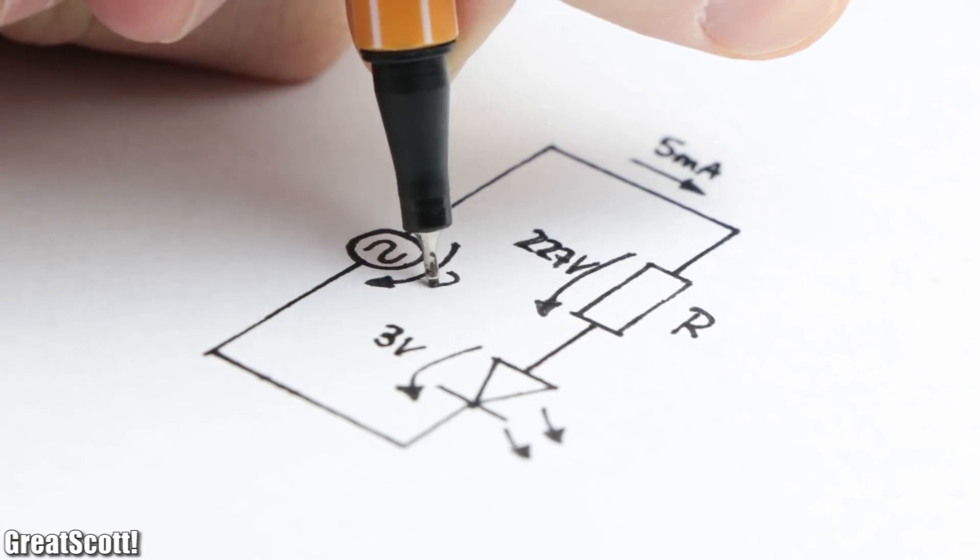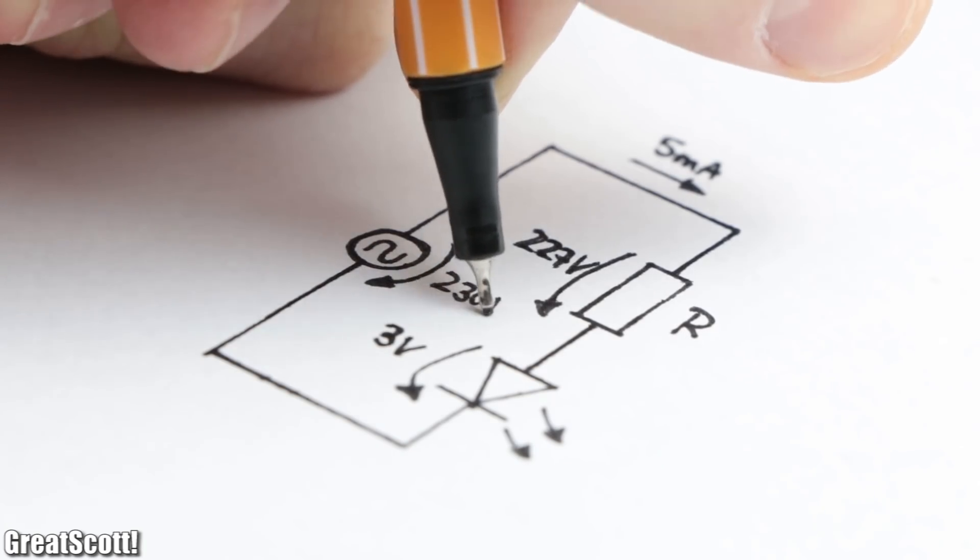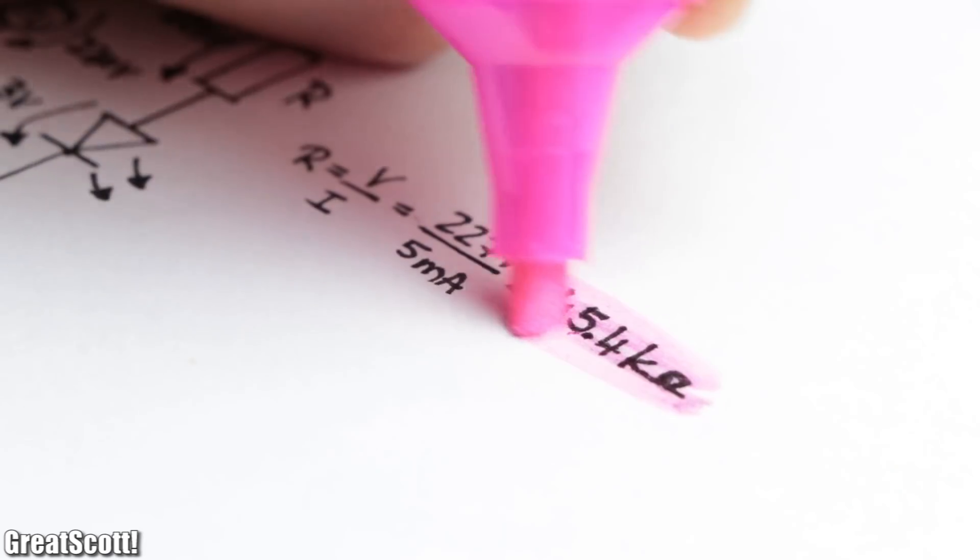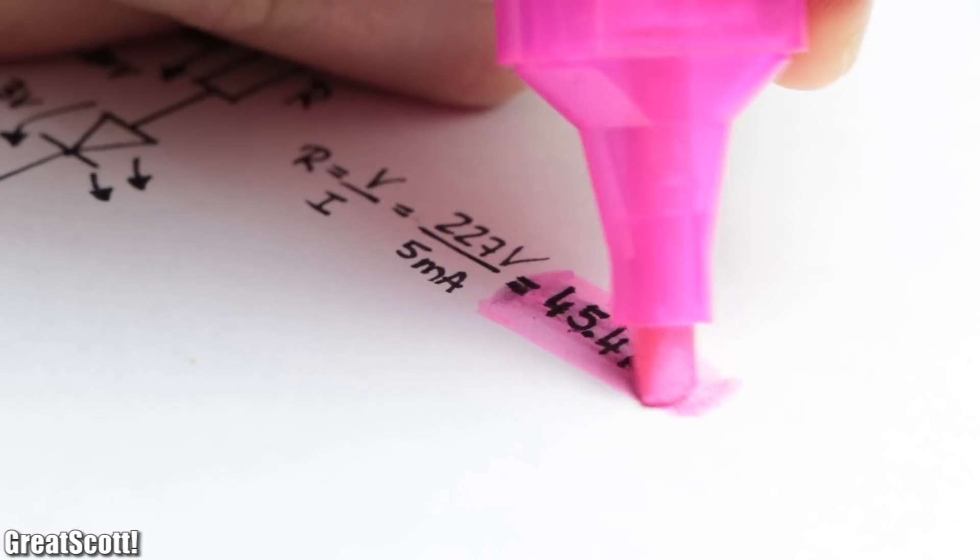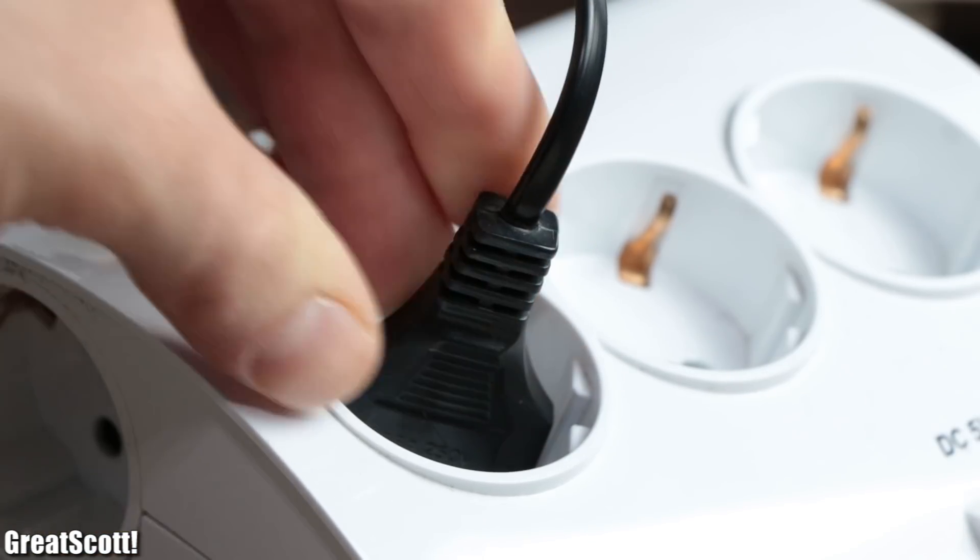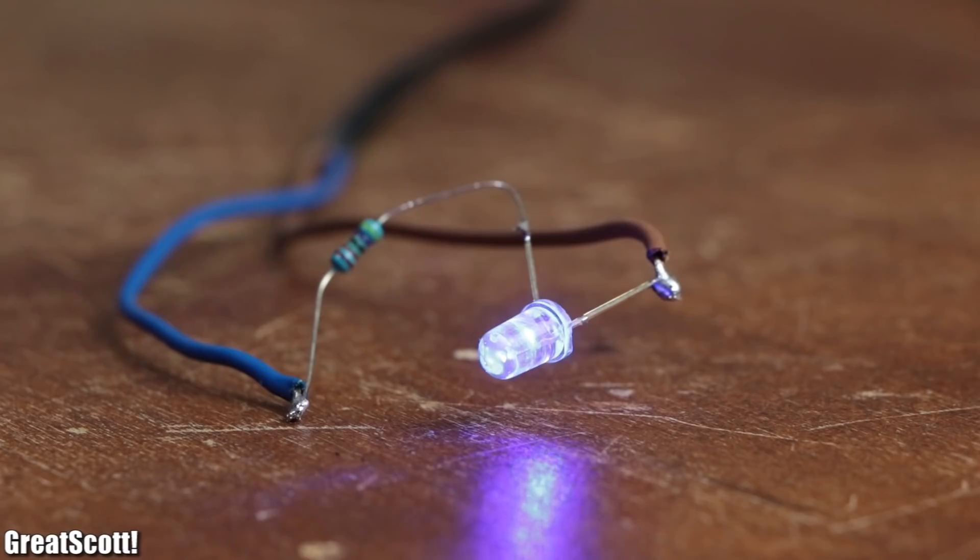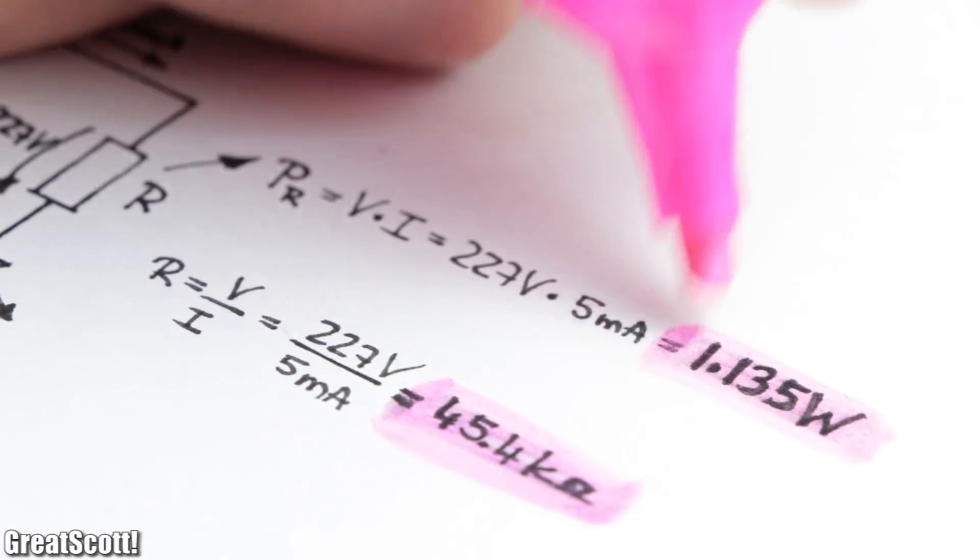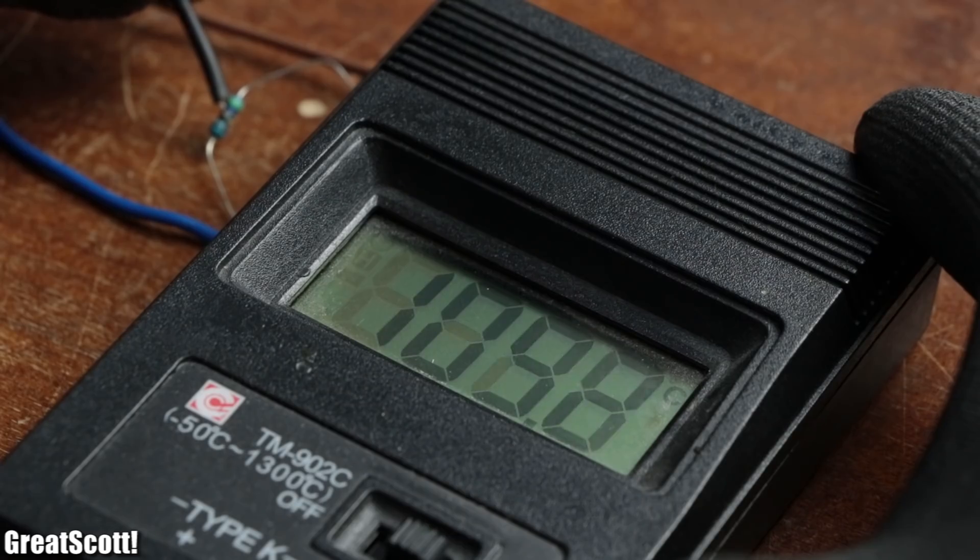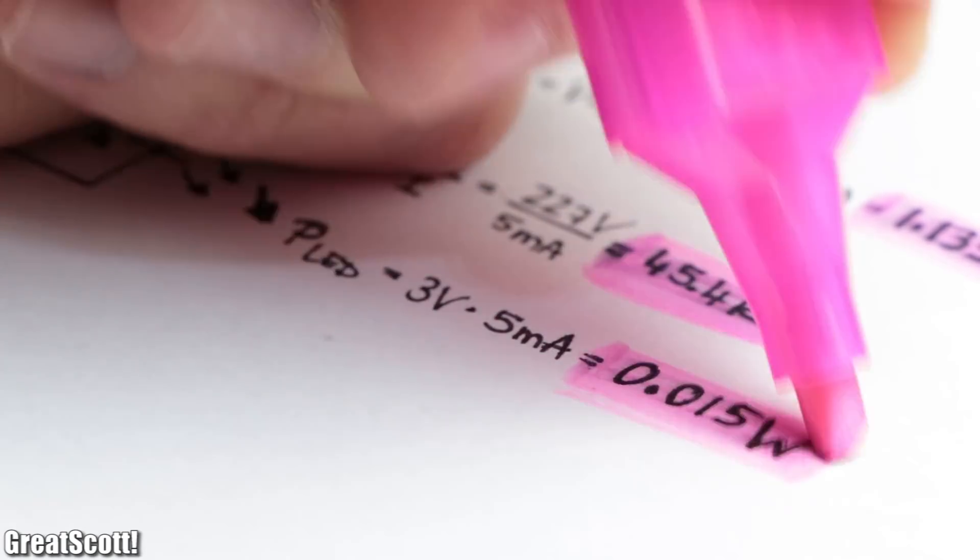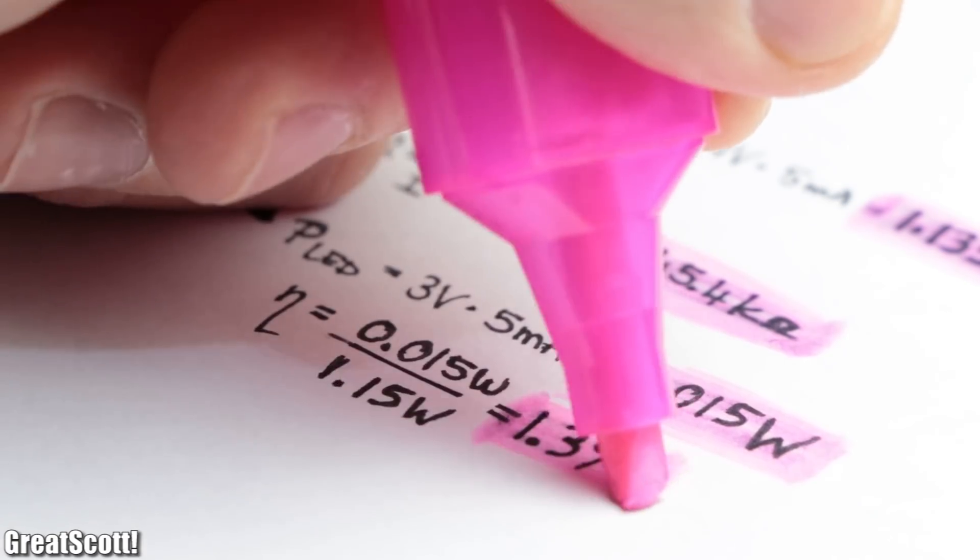So in theory we should be able to create the same circuit with 230 volts mains AC voltage. After calculating the correct resistor value, I created this circuit and hooked it up to the power grid, which as you can see powers the LED just fine. The only problem is that we waste 1.135 watts of power as heat through the resistor, while the LED only uses 0.015 watts, which is highly inefficient.